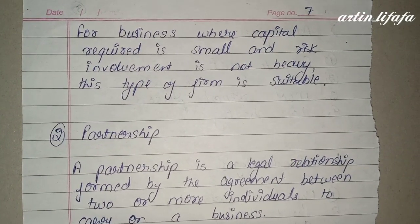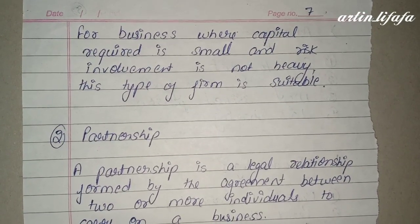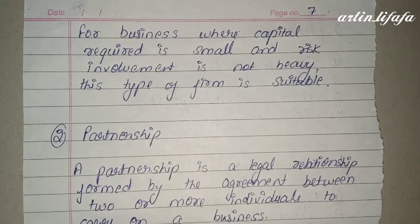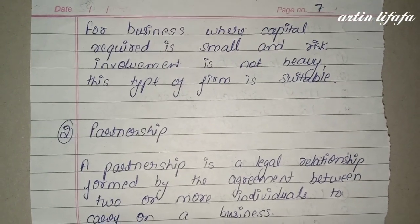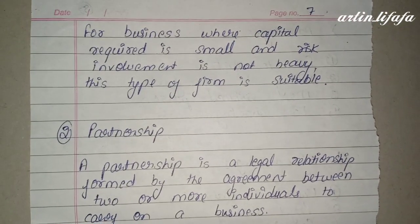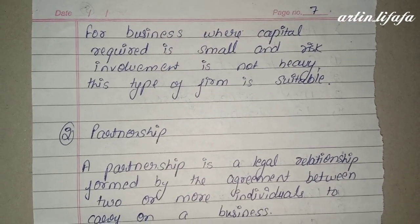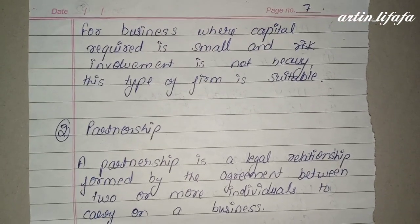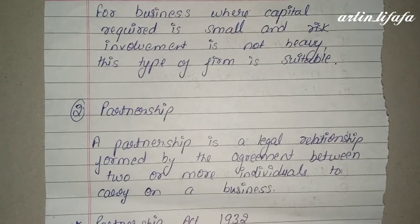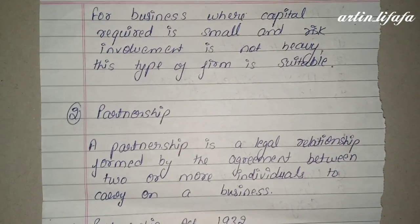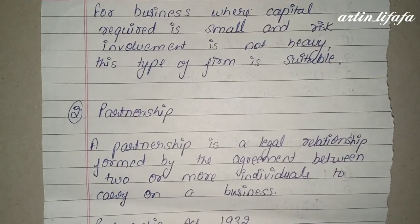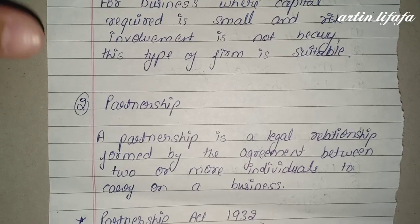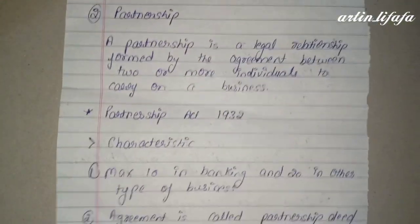Basically, sole proprietorship suitable होती है where capital required is small and risk involvement is not heavy. अगर कोई भी individual अपना business start करना चाहता है और उन advantages से safety मिलती है, तो sole proprietorship उनके लिए suitable है। इसके बाद next आता है partnership।